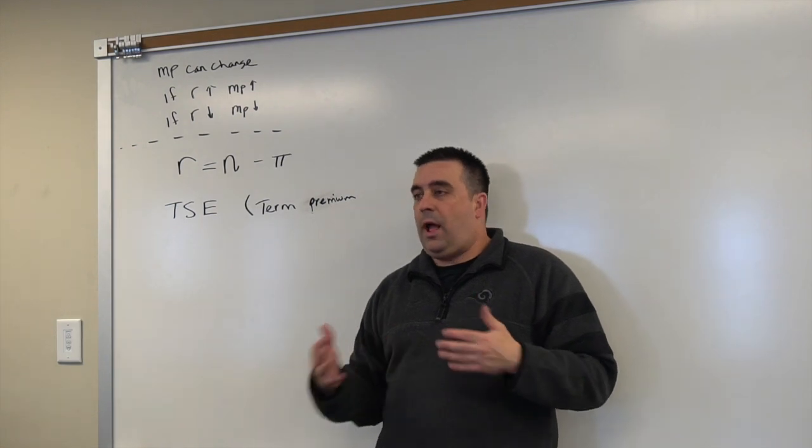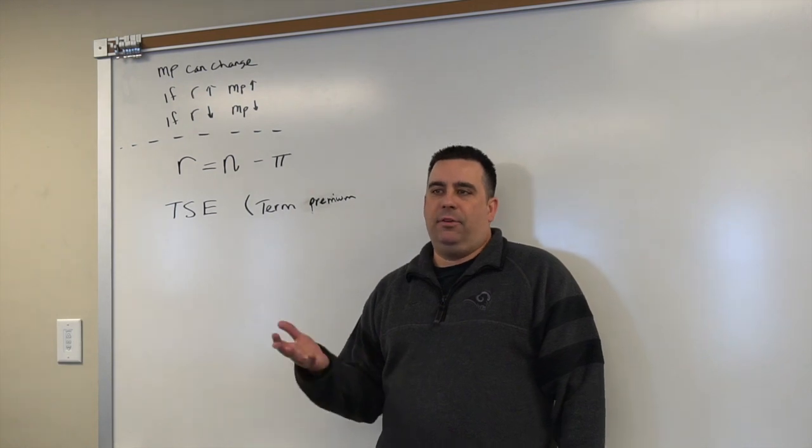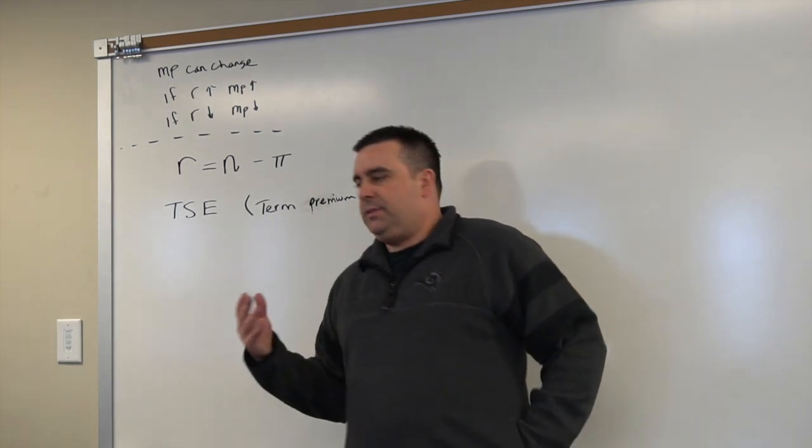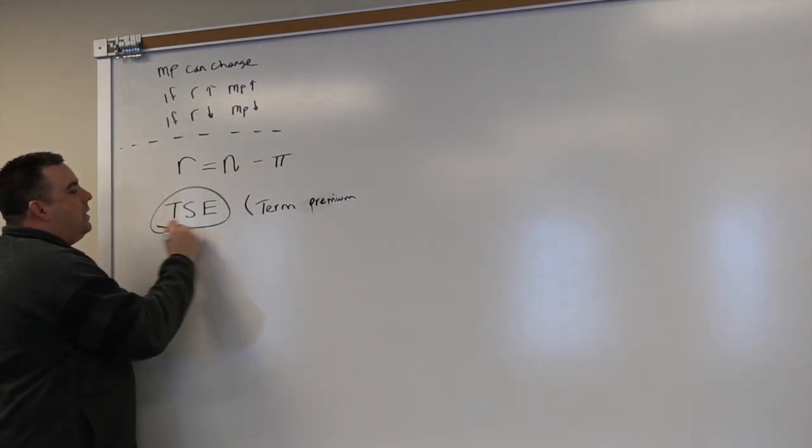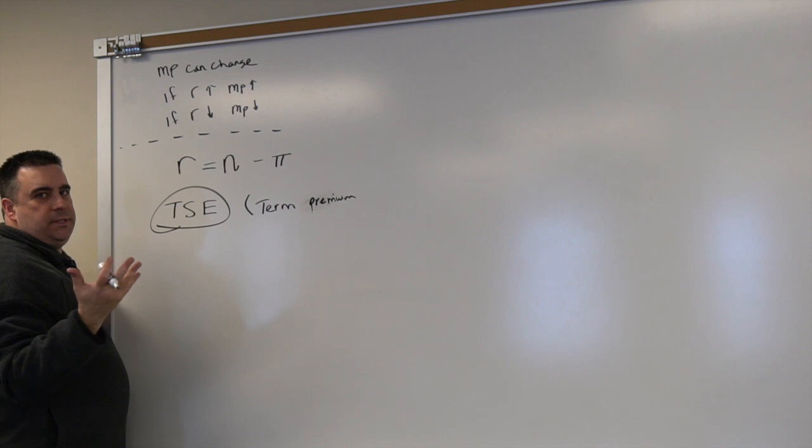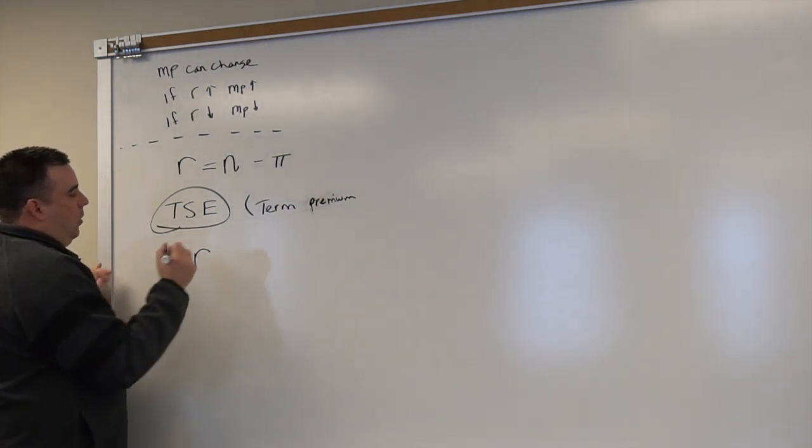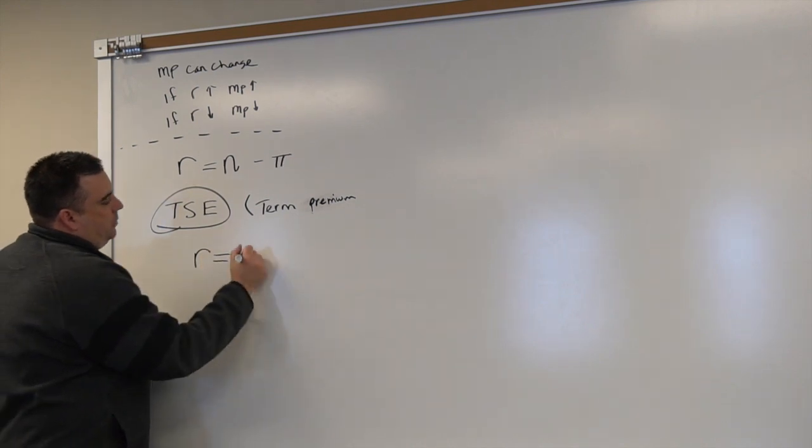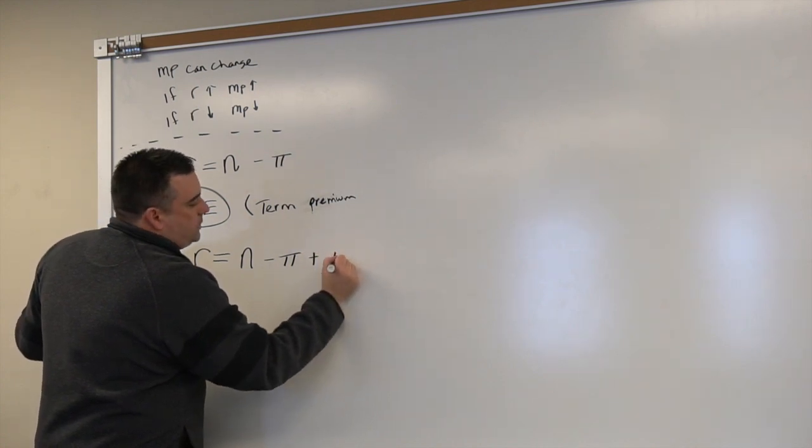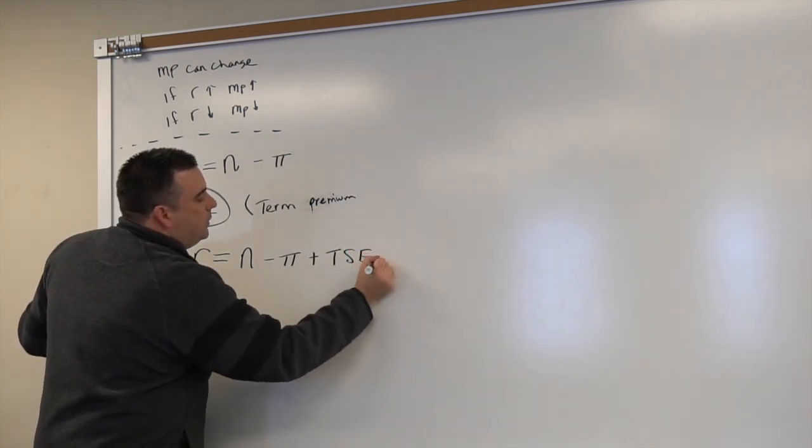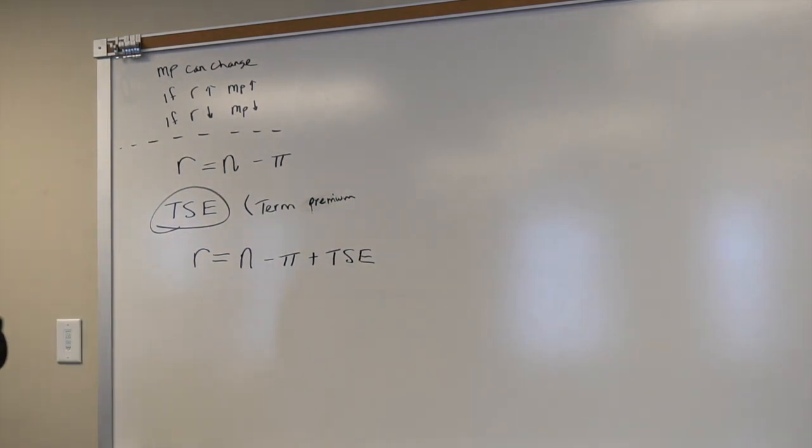That's the idea behind this term premium. If you're not going to have access to your money for 30 years, you need to get more out of it in return. So the TSE effectively says we've got to add this to whatever interest rate you're receiving. So R equals N minus π plus TSE. That's one element that the book adds to this.